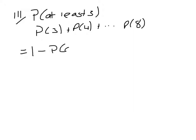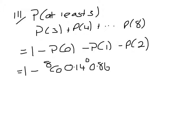Do 1 take away the probability of 0, take away the probability of 1, take away the probability of 2. So that is going to be 1 take away 8C0 times 0.14 to the power 0 times 0.86 to the power 8, take away 8C1 times 0.14 to the power 1 times 0.86 to the power 7, take away 8C2 times 0.14 to the power 2 times 0.86 to the power 6.